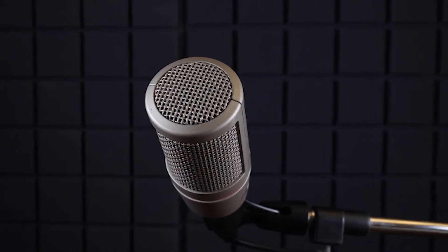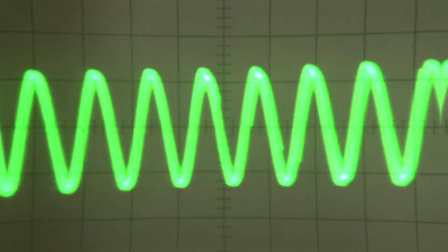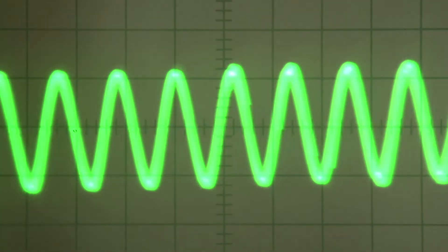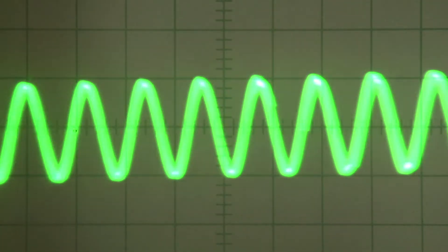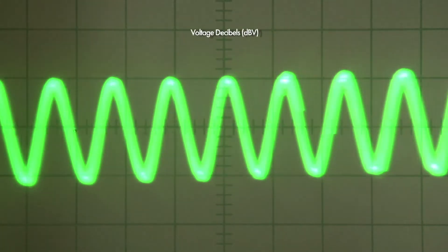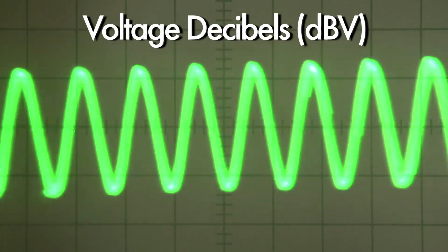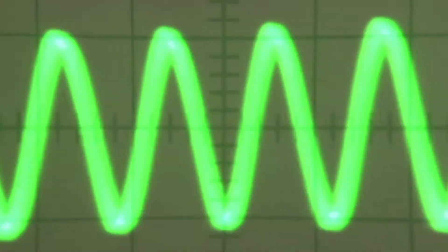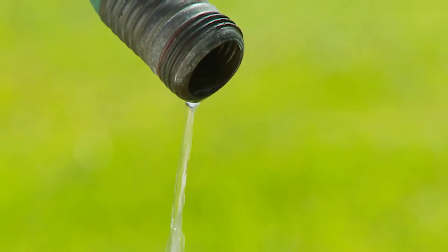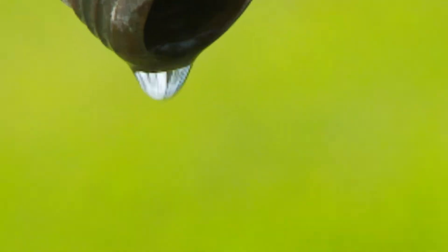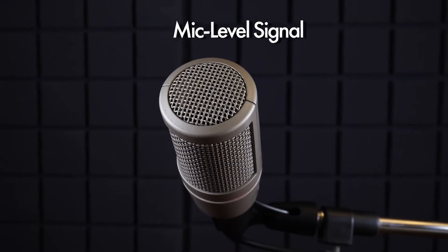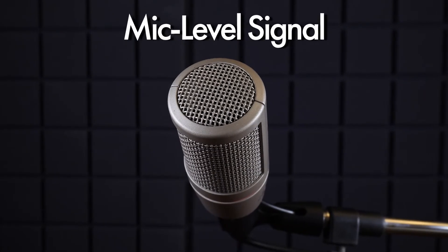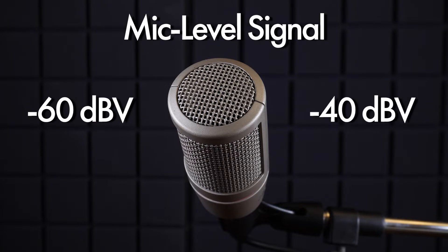When sound enters a microphone, it's converted into an electrical signal, which is measured using voltage decibels. This signal, however, is very weak and is characterized as a mic level signal, which typically sits somewhere between negative 60 and negative 40 voltage decibels.